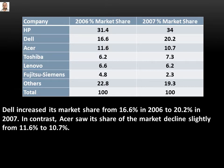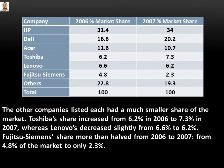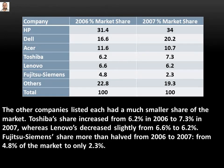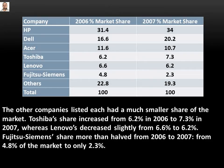I wrote about the competitors of the leader company. After that paragraph I write about the other companies. The other companies listed each had a much smaller share of the market.